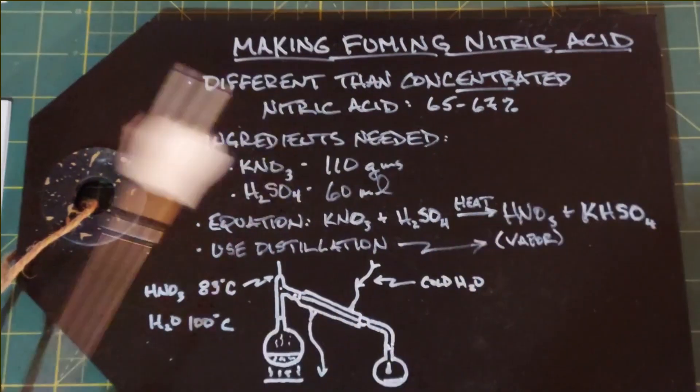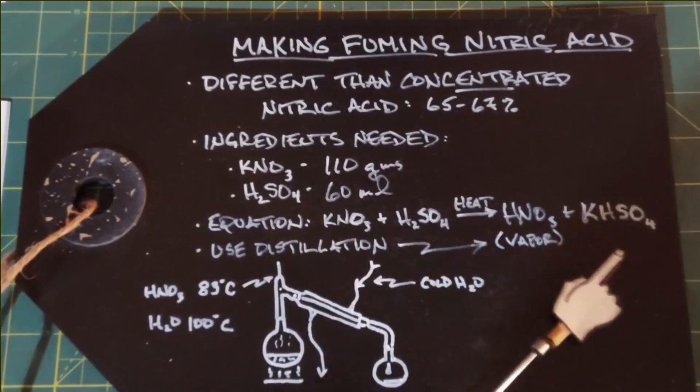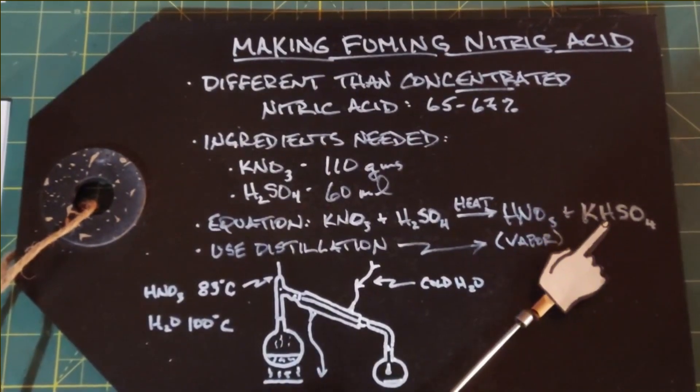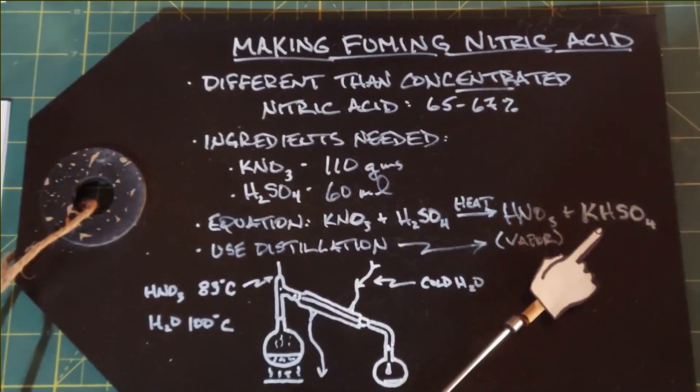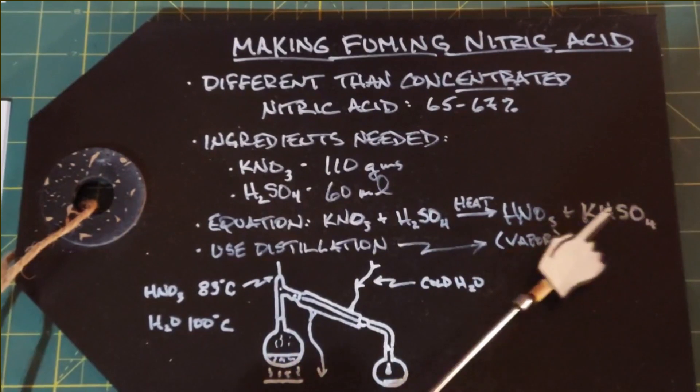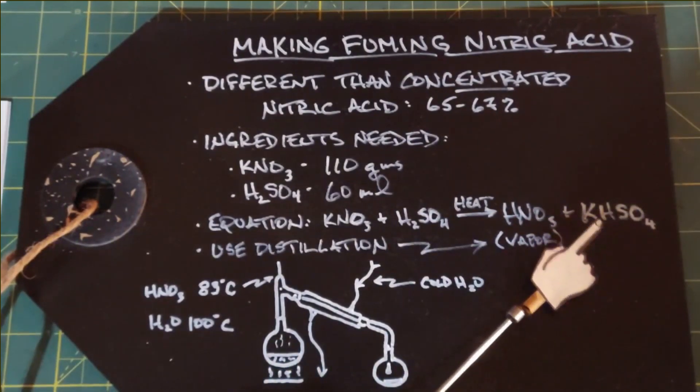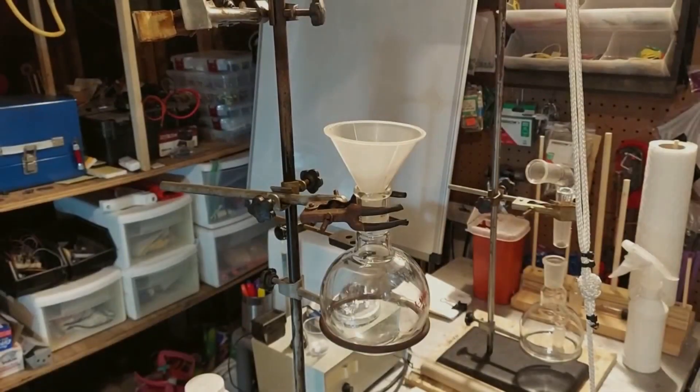One last comment here—the second product, potassium bisulfate, you want to save it. It's a pretty strong oxidizer in of itself. It acts like bleach—if you get it on your clothes, it'll eat through it and take colors out of things. It's pretty nasty stuff, but there are some experiments where you can use this, so do save this and don't throw it out.